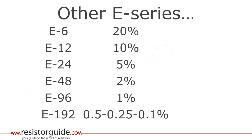The E-12 series is probably the most common, but there are also other widely used series as you can see in this overview. They are derived in the exact same way as the E-12 series. For example, the E-6 series splits every decade in 6 steps and is used for a tolerance of 20%. The E-192 series is used for 0.5%, 0.25% and 0.1%.